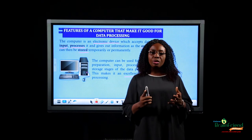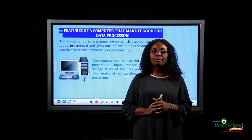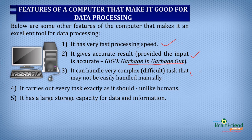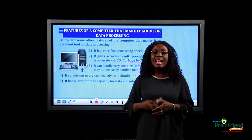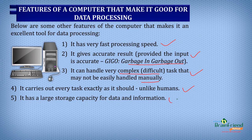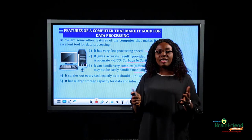The computer has a very fast processing speed. It gives accurate results provided the input is accurate, because the computer works with the principle of 'garbage in, garbage out.' The computer can handle very complex tasks that may not be easily handled manually. It carries out every task exactly as it should, unlike humans who may perform inconsistently when tired. And the computer has very large storage capacity for data and information.